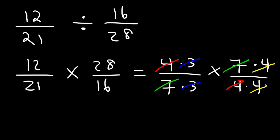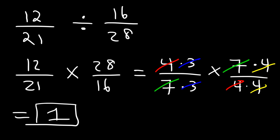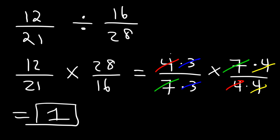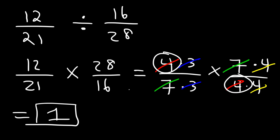When everything cancels, the answer is 1. If you think about it, 3 divided by 3 is 1, and 4 over 4 is 1, so the whole thing is simply 1.